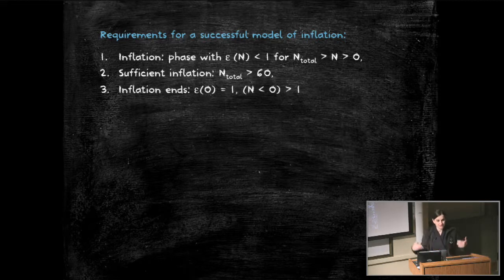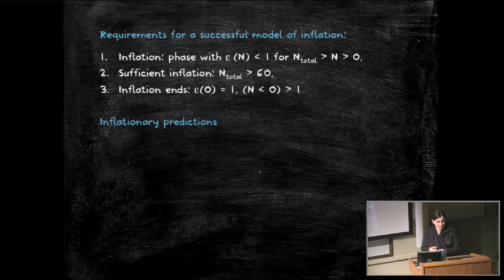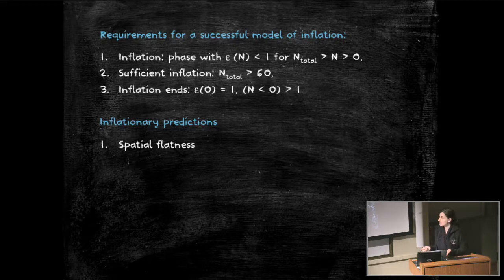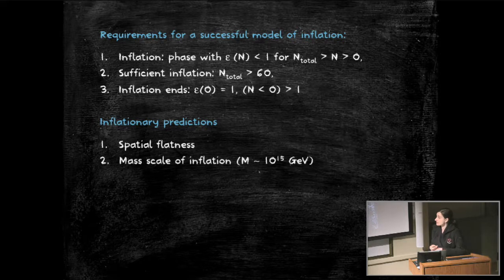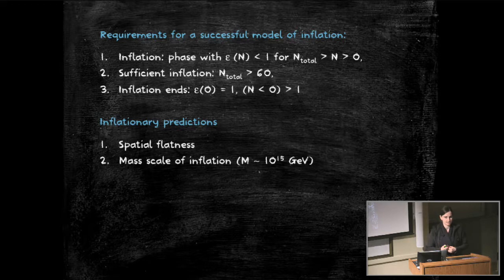We also know, in order for structure to form, this inflationary phase needs to end, and it ends when the criterion breaks down — that means the equation of state parameter is no longer smaller but equal or bigger than one. Just by making these very simple assumptions, we can derive a whole set of predictions, which are quite impressively confirmed by observations. The first was spatial flatness. The second was that from the measured amplitude of the density perturbations, we can immediately derive the energy scale of inflation. There is a confusion about the fact that R gives the energy scale of inflation — we need R measurements. From delta rho over rho being 10 to the minus 5, we know that the energy scale of inflation is around 10 to the 15 GeV.